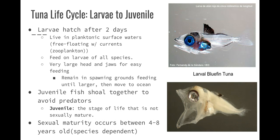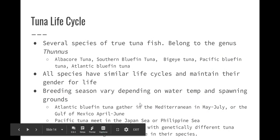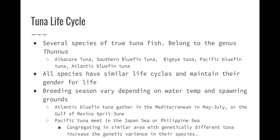Larvae to juvenile: larvae will hatch after about two days of fertilization, which is pretty fast. They live in planktonic surface waters, free-floating with zooplankton — they are a form of zooplankton. They feed on larvae of all other species and have very large heads and jaws for easy feeding. They're going to feed in their spawning grounds until they're a bit larger and able to move to the open ocean. The Atlantic will spawn in the Mediterranean or Gulf of Mexico; the Pacific will do the Japan Sea or the Philippine Sea.